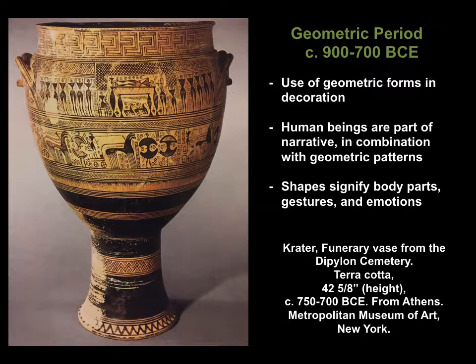This funerary vase, called a crater, was used to mark a grave, which makes sense when you consider the funerary scene portrayed on its surface. The scene in front of us is a funeral, with the deceased laid horizontally upon the platform, or bier. Individuals flank the deceased on either side, shown in sequence with their arms raised above their heads in a sign of mourning. Below them horses, soldiers, and armor are shown, perhaps referring to the military experience of the deceased. These scenes are separated by horizontal bands of pigment and design, creating a highly decorative work that guides our eyes to the central activities of the piece.